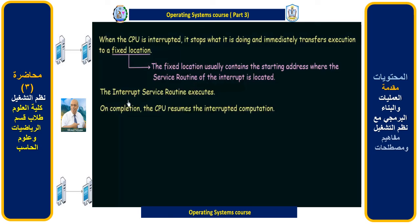The interrupt service routine executes, and whatever was written in it gets executed completely. On completion, the CPU resumes the interrupted computation. The CPU was already doing something before the interrupt arose, transferred execution to the ISR, executed it, and when done, goes back from where it came from and resumes whatever it was doing. This is how the CPU responds to interrupts.